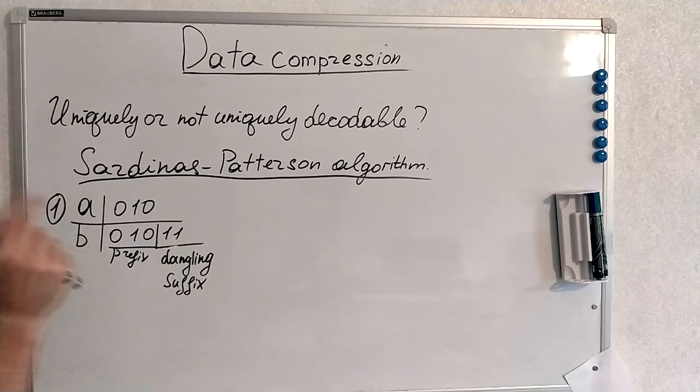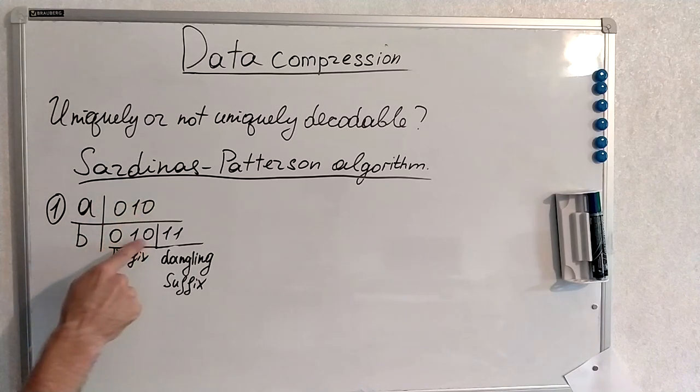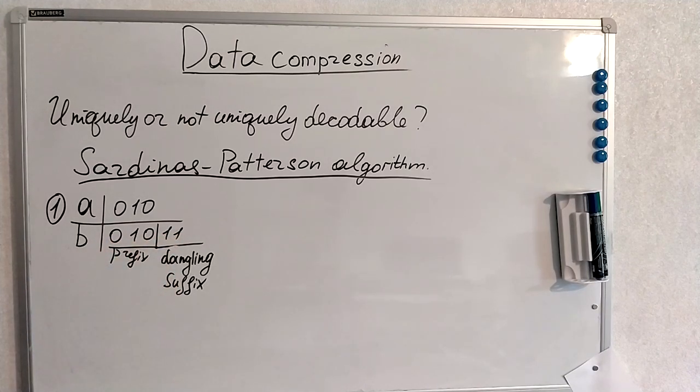This is the code for A and this is the code for B. So A is the prefix for B because B starts with 0, 1, 0 and 1, 1, what is left, it is the dangling suffix.